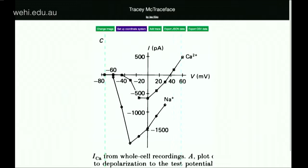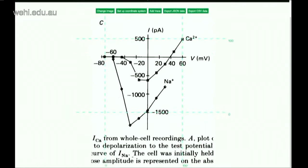I make a coordinate system, enter my axis — so that goes from minus 80 to 60, and from minus 1,500 to 500. And then I go and I start and trace my data points. This already did not take nearly as long as just sharpening my pencils. I'm going to add a second trace and export the data.